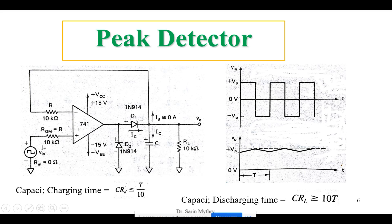During the positive half cycle of the input signal, when we supply the positive half cycle — there is a square wave — the output of the op-amp will drive a positive value. That positive value turns diode D1 on into forward bias. Whenever diode D1 is turned on, it is just like a pipeline path has been created for the flow of current. The current passing through this diode is IC, and that current will be stored in the capacitor in terms of charge.